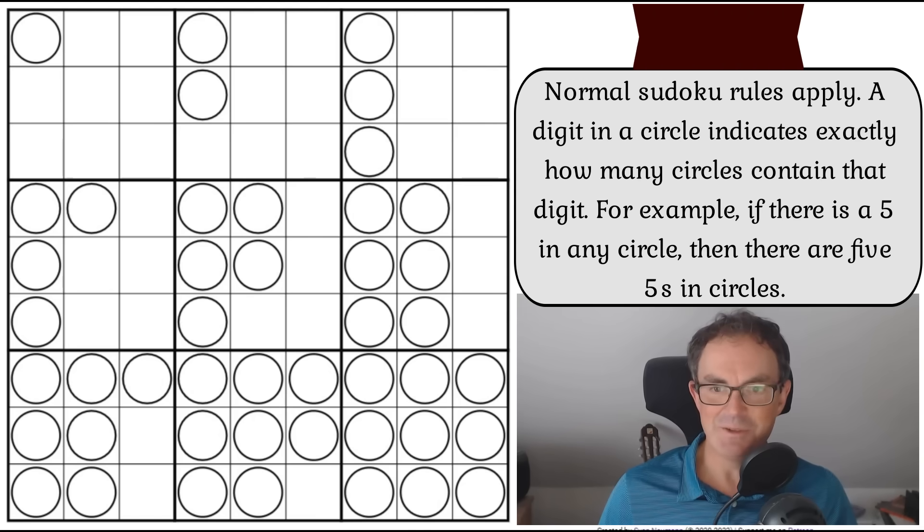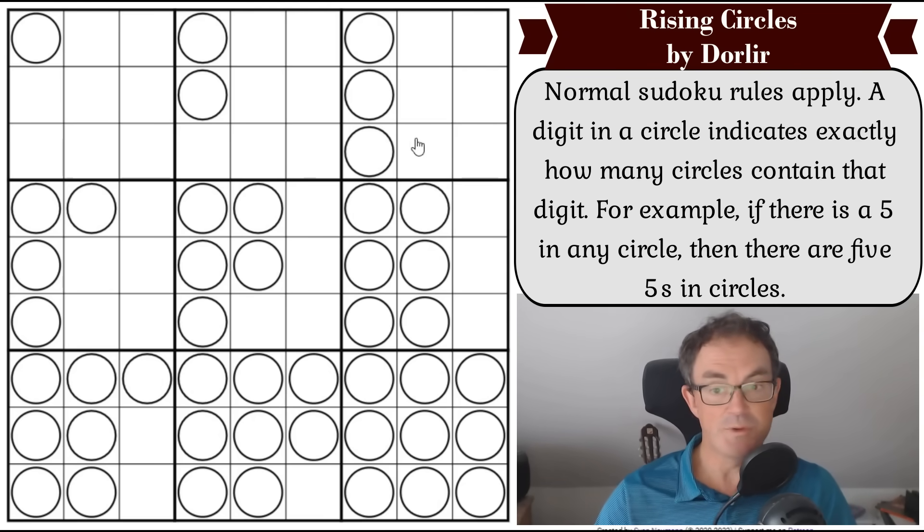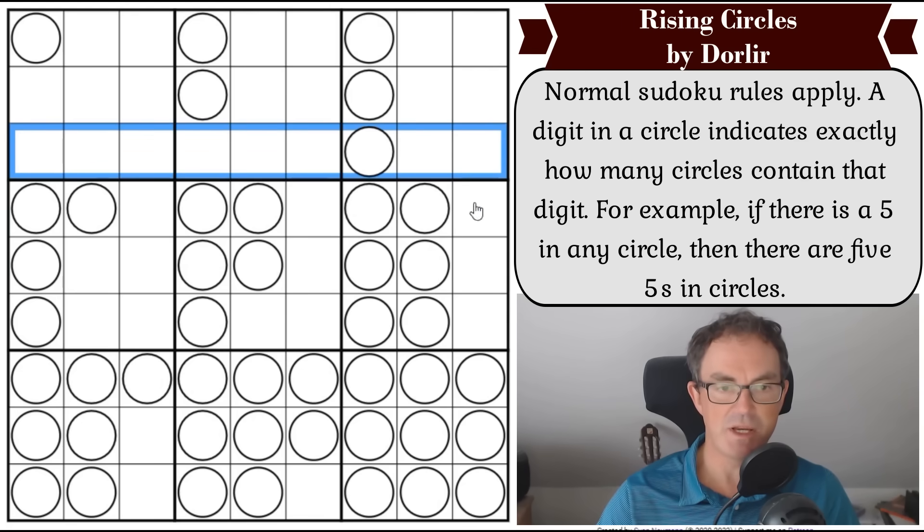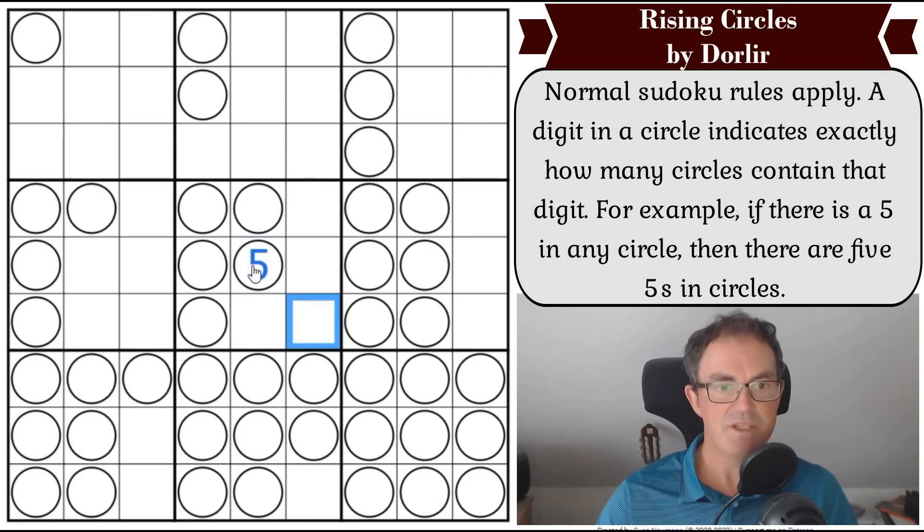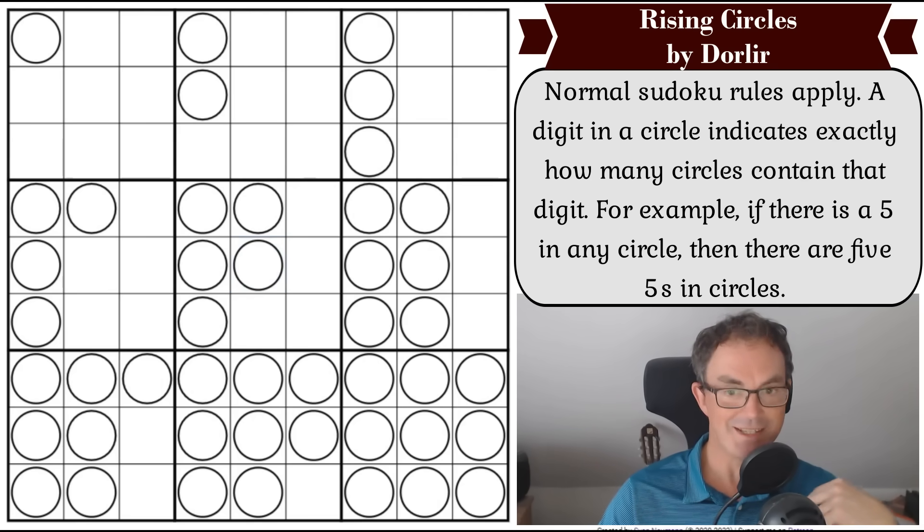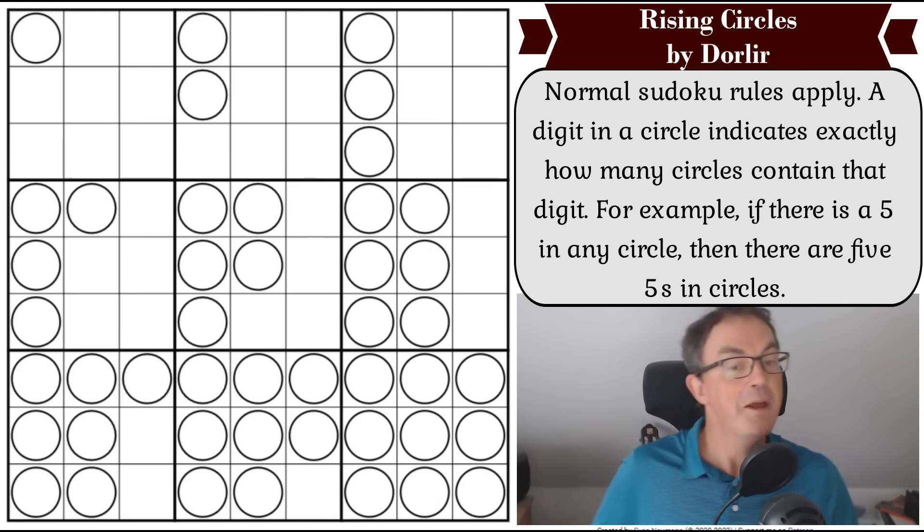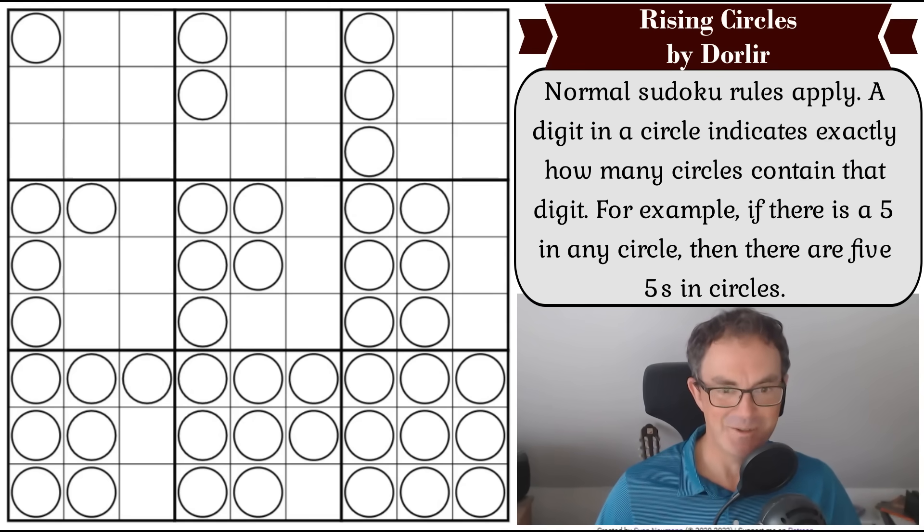But let's have a look at Rising Circles by Dorlia. And I will read you the rules. They are as follows. Normal Sudoku rules apply. So we have to put the digits one to nine in every row, in every column, and in every three by three box once each. A digit in a circle indicates how many circles contain that digit. For example, if there is a five in any circle, so let's put a five in the middle of the grid. If this is a five, then there are five fives in circles. So it's exactly the same as the circle rule we've seen recently. I can actually see some interesting things about this puzzle immediately. But do have a go. The way to play is to click the link under the video as usual. Now I get to play. Let's get cracking.